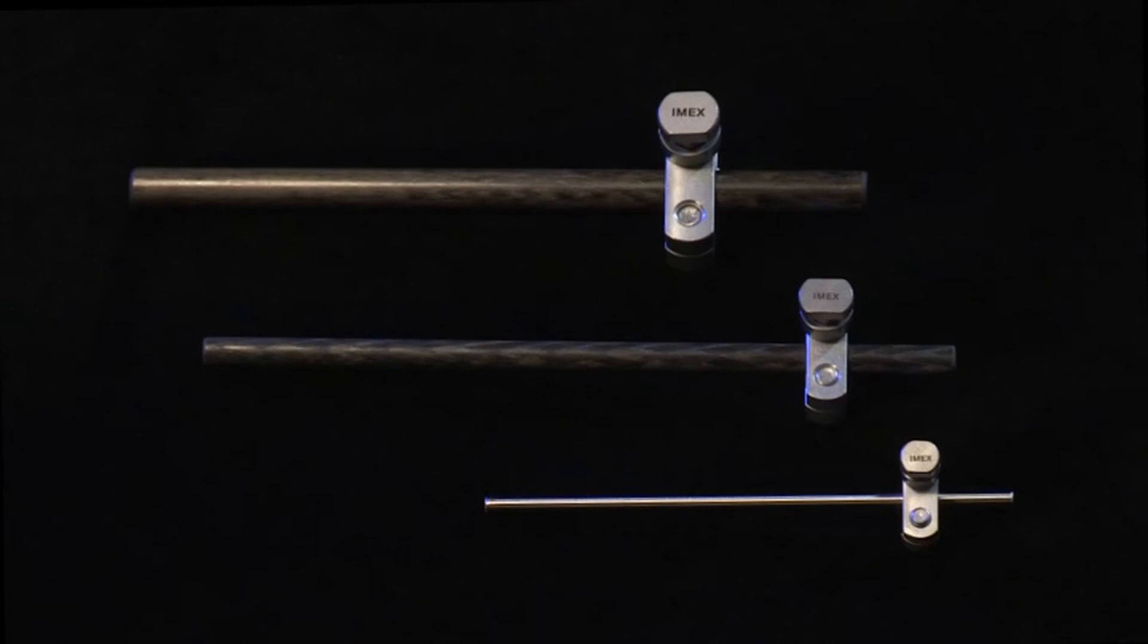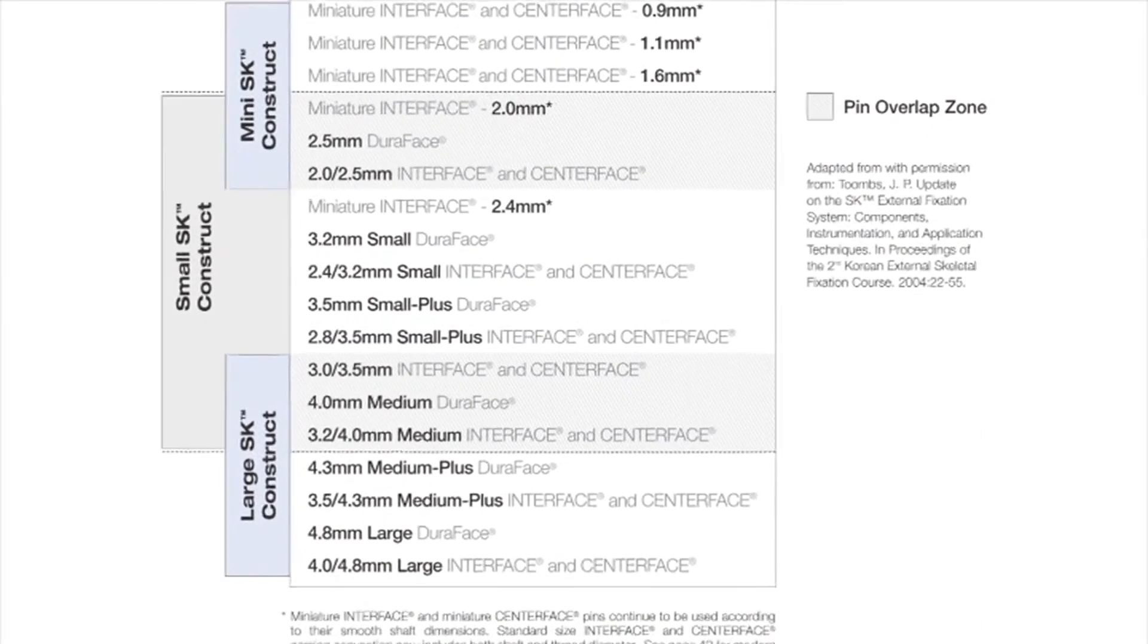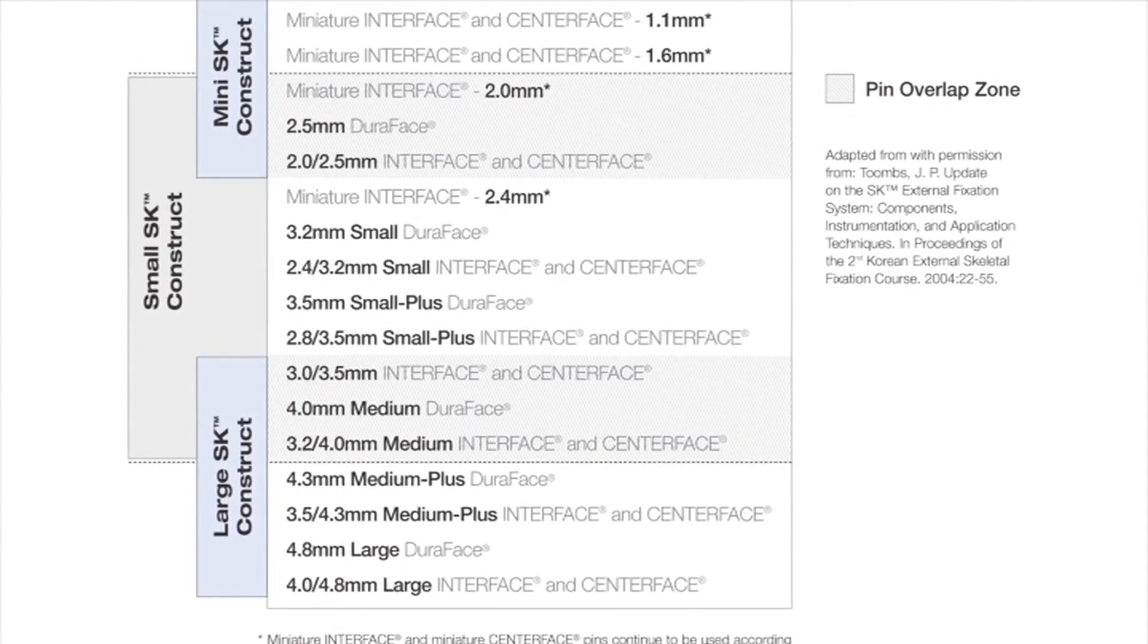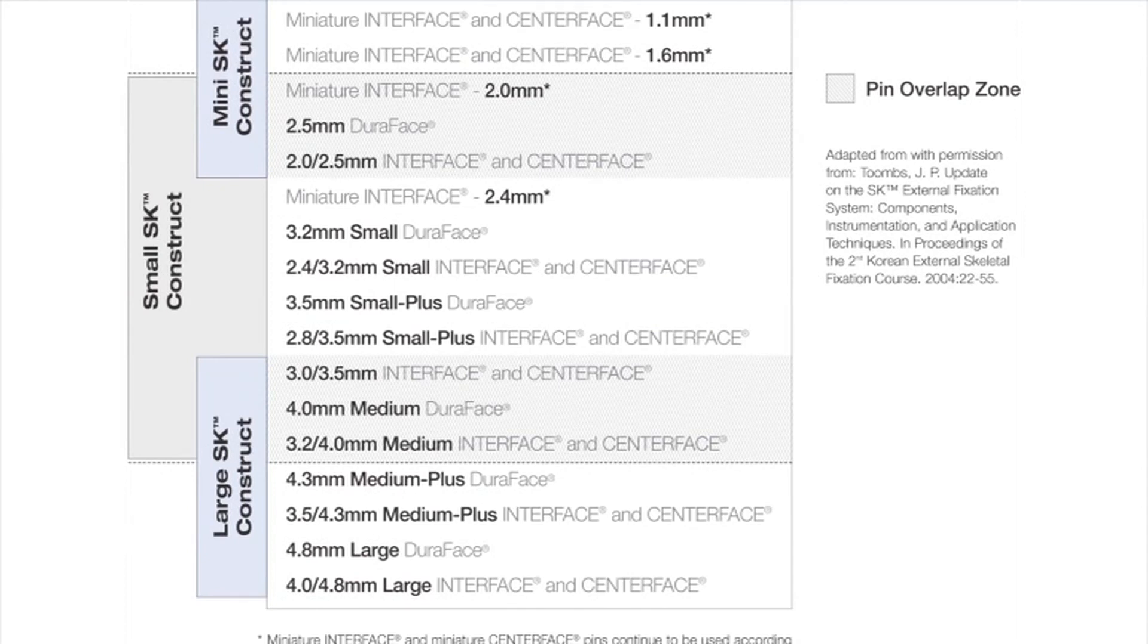Large carbon fiber rods are much more popular and almost exclusively used with the large SK clamp. When one looks at this pin diameter gripping data in a chart form, it is apparent that between the mini and small SK clamp sizes, as well as between the small and large SK clamps, there is overlap in the ranges of pin diameters that can be used with each SK clamp size. This overlap zone offers the surgeon the ability to select one of two bar size and strength options when using common pin diameters.